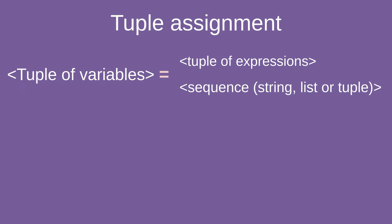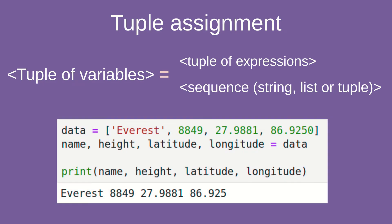We can see one more example, again applying this formula, this time for a sequence. We have a list of four values and we're going to assign those values to four variables. At the end, each of those variables will have exactly the same value as from the list. It's important to mention that the number of variables on the left should be equal to the number on the right, otherwise you get an error.